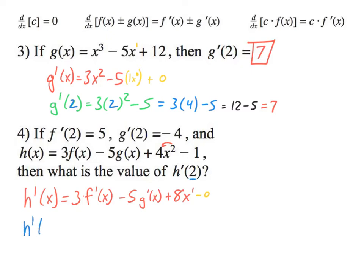So h'(2) is equal to 3f'(2) minus 5g'(2) plus 8 times 2. We put 2 for all the x's. Look right here, doesn't that equal this? So h'(2) equals 3 times 5, and this is 5 times -4, and the last part 8 times 2 is 16.